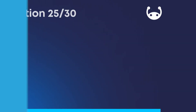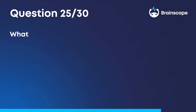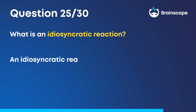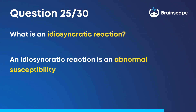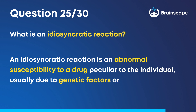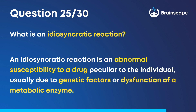Question 25. What is an idiosyncratic reaction? An idiosyncratic reaction is an abnormal susceptibility to a drug peculiar to the individual, usually due to genetic factors or dysfunction of a metabolic enzyme.